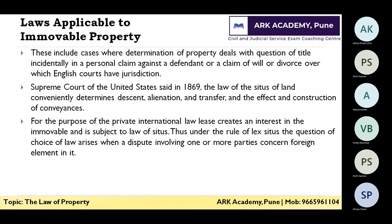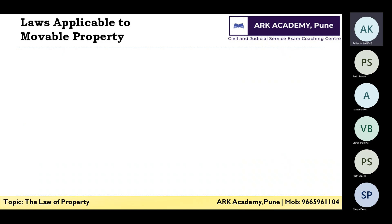Under the rule of lex situs, the question of choice of law arises when a dispute involving one or more parties has a foreign element. Whenever a foreign element is involved in immovable property, the rule of lex situs is applied. When it comes to movable property, there is a different situation.